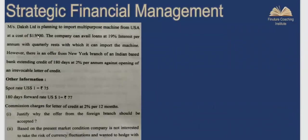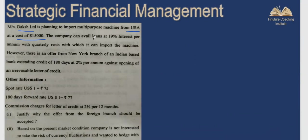There is a company called Ducks Limited which has to buy machinery from a company in the USA at a cost of $15,000. The company has two options. Option one: the company can avail a loan at 19% rate of interest per annum with quarterly compounding, and at the end of six months they can import the machinery.